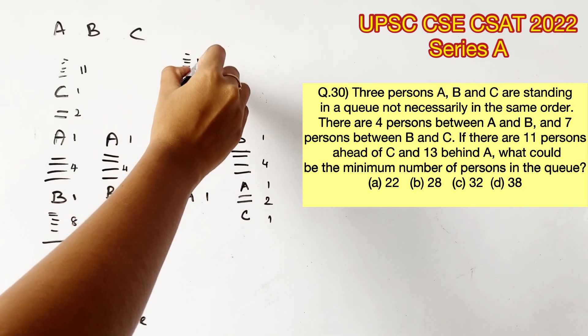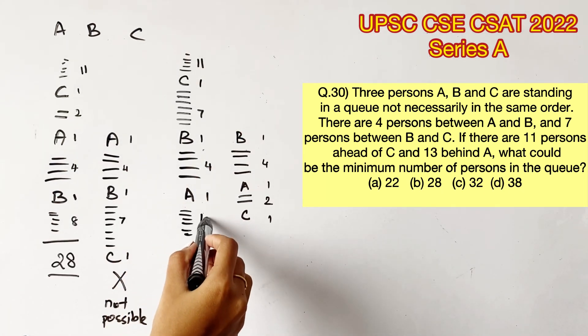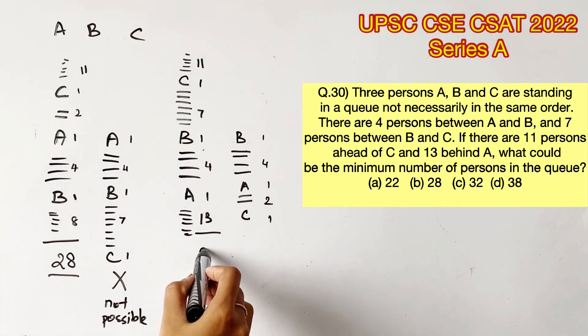We will go to the next possibility. And let's mark 11 people ahead of C. Let's mark 13 people behind A. Adding these up, we will get 38, which we can eliminate right away because we already got 28, which is lesser than 38.